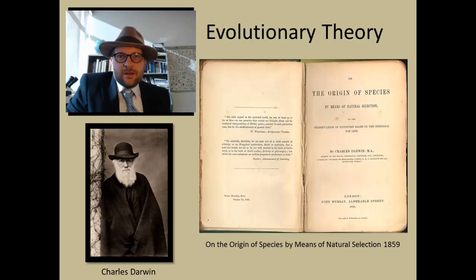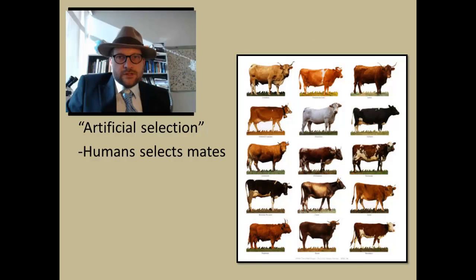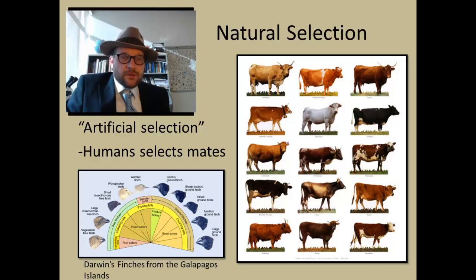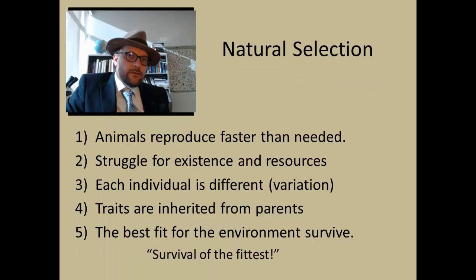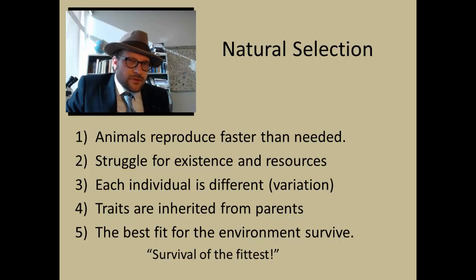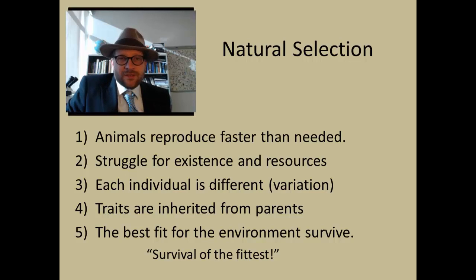In fact Darwin lamented the poor state of the fossil record, and much more of the book was detailing the discussion of artificial selection or selective breeding. Much of Darwin's ideas came from his passion to raise different domestic animals and plants and breeding them for desirable traits. What Darwin wondered is if this selective breeding was occurring naturally — for example in the finches he collected in the Galapagos Islands — and this is his idea of natural selection. Darwin's theory of natural selection can be broken into five key ideas: animals reproduce faster than needed; there is a struggle for existence and resources; each individual is different and there is variation in the population; traits are inherited from parents; and the best fit for the environment are the ones that survive — or as everyone calls it, survival of the fittest.